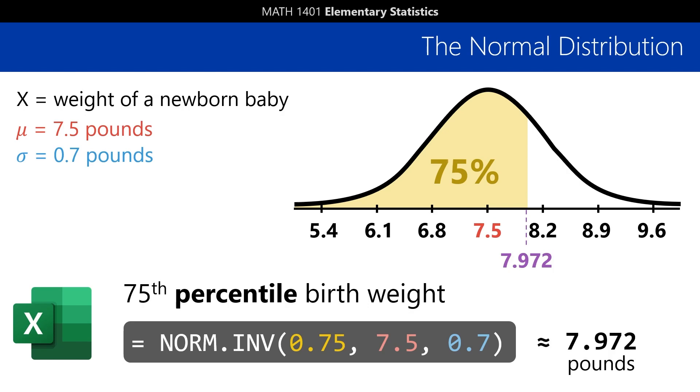So that tells us that 75% of all newborns have a weight of 7.972 pounds or less.